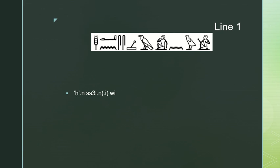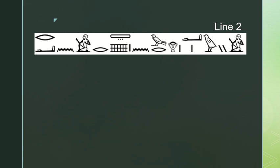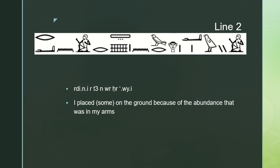Then — aha en sasa'i en iwi, where the first i is not written and has been supplied in parentheses because the scribe omitted it as relatively obvious — I satisfied myself. Then I placed some of the food on the ground because of the abundance that was in my arms. There is discussion in the textbook over whether this word is an adjective modifying a missing word like food, or just a noun meaning excess or abundance. I prefer the latter reading — the greatness in his arms is too heavy to carry, so he puts it on the ground.